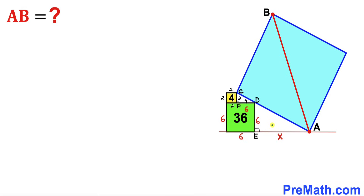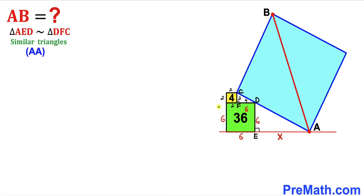Let's focus on these two right triangles: triangle AED and triangle DFC. Both of these angles are 90 degrees. Therefore we conclude that triangles AED and DFC are similar triangles according to the angle similarity theorem, because these angles are each 90 degrees and these are our corresponding angles.